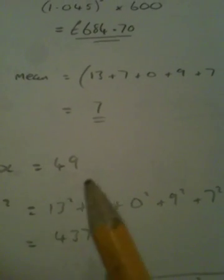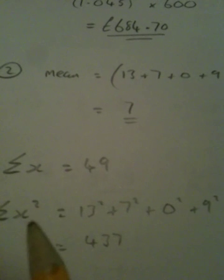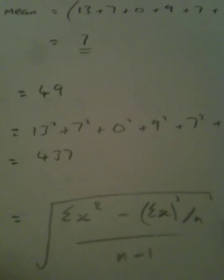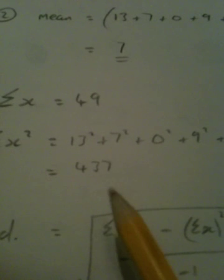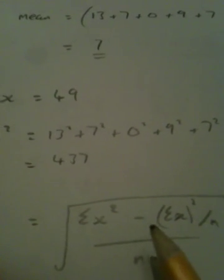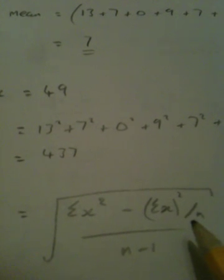437. Then we need to substitute these two values into the formula. We have the square root of absolutely everything. We have the sum of x squared, which is 437, subtract the sum of x, 49 squared. So it's going to be minus 49 squared over n. N is how many numbers we have—we have seven numbers.